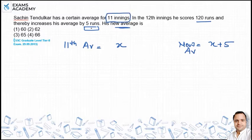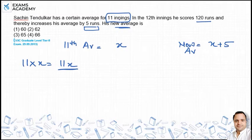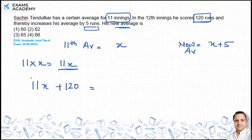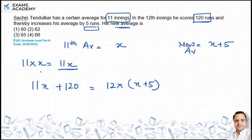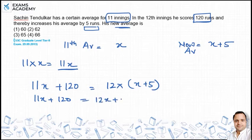Total runs in 11 innings = 11 × X. In the 12th inning, 120 runs are added, so total runs = 11X + 120. For 12 innings, total run = 12 × (X + 5) = 12X + 60. Setting them equal: 11X + 120 = 12X + 60.